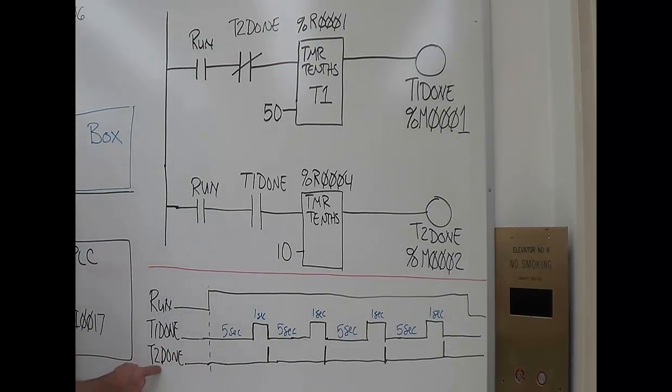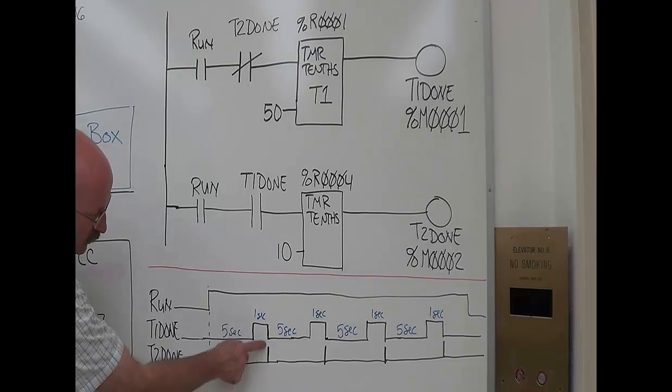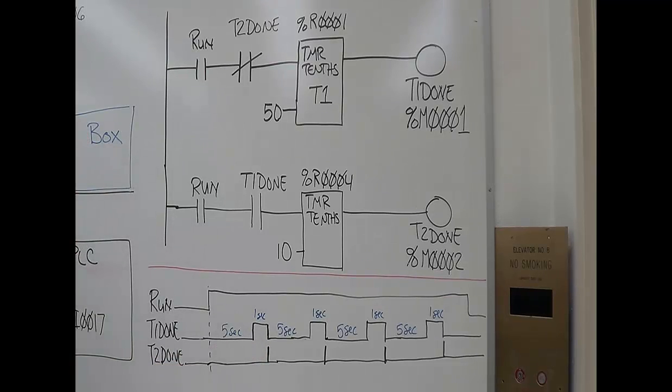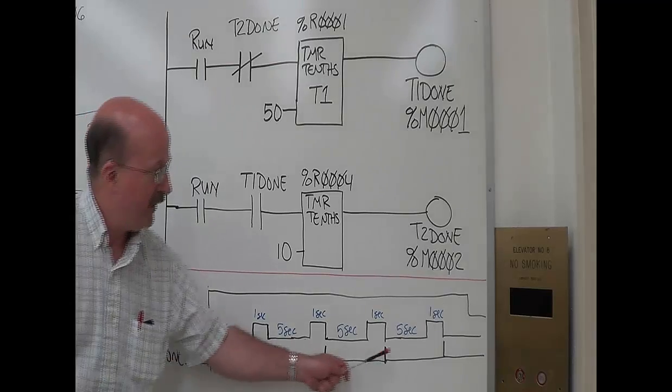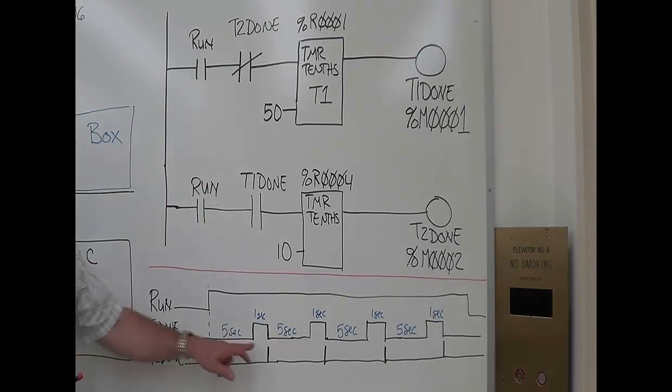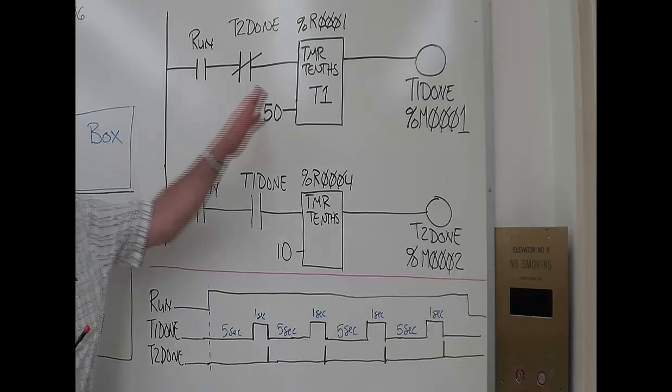What happens if you look at timer 2 done, I show its output going true as just a line. One single line right there, here, here, and here. That's indicative of the output just going true for one scan.